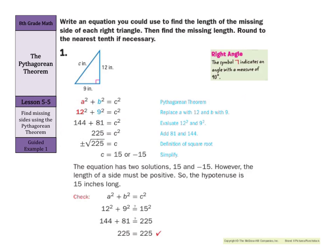Now our guided examples: write an equation you could use to find the length of the missing side of each right triangle, then find the missing length. Round to the nearest tenth if necessary. This right angle is our 90 degrees, so our legs are formed around it. I always label my A's and B's for my legs — it doesn't matter which you call A or B, but it does matter what you call your hypotenuse C. We have A squared plus B squared equals C squared. Put in 12 for A, 9 for B. It is so important that you square these first — order of operations tells us to do exponents first. So 12 squared is 144, 9 squared is 81, then we add.